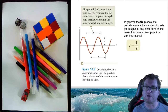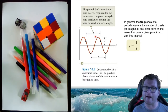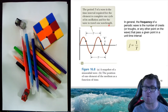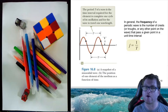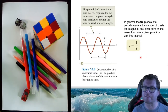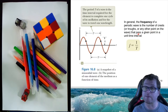Looking at the wave as a function of time, the period is defined as the time interval required for the element to complete one full cycle of oscillation and for the wave to travel one wavelength. You can see one full cycle going down and returning to that starting point — the time taken for that is the period. The frequency is the inverse of the period: frequency = 1/T. The frequency is the number of crests or troughs — or any other given point of the wave — that pass a given point in a unit time interval. Remember, frequency has units of per second, or hertz.